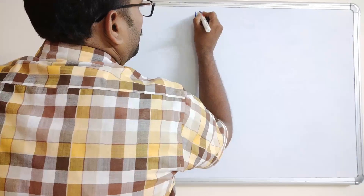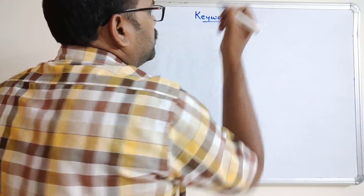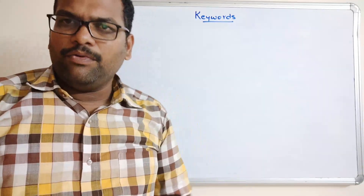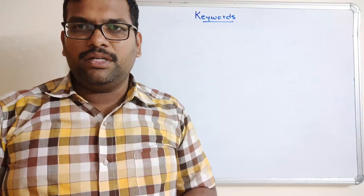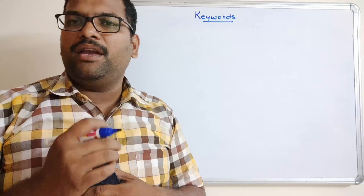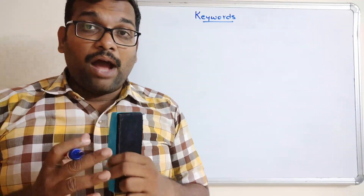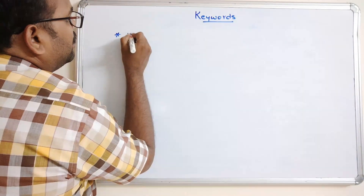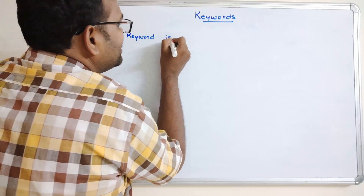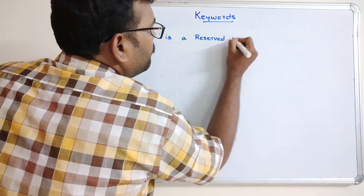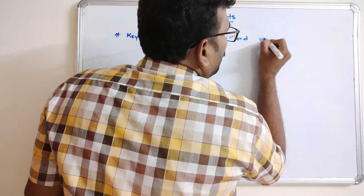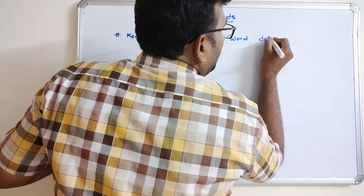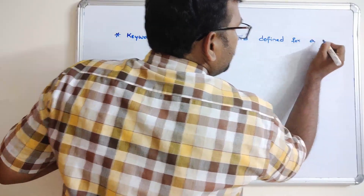Hello friends, welcome back to our channel. Today we will see one more topic in R programming — what are the keywords. Similar to other programming languages, R programming also has some predefined words which we call keywords, and each predefined word has a specific functionality. We have to use those reserved words for that particular functionality only. A keyword is a reserved word defined for a specific functionality.